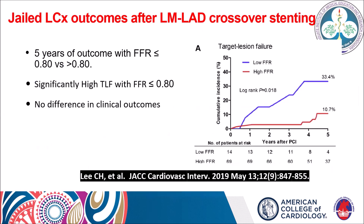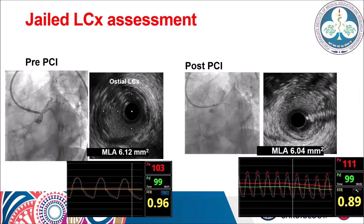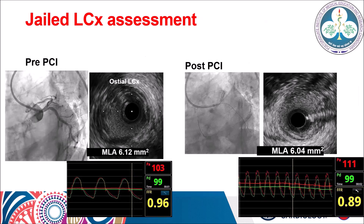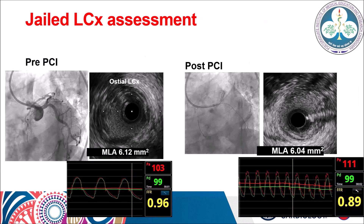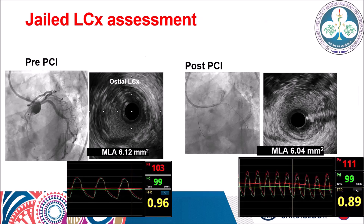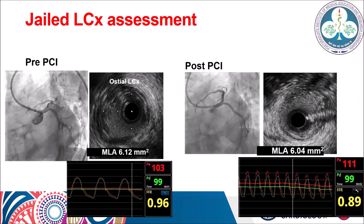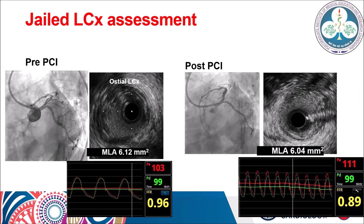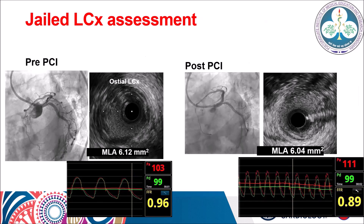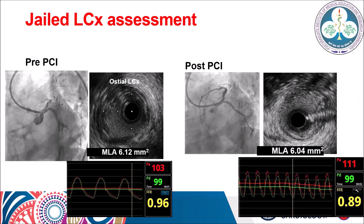Regarding jailed LCX outcomes following left main to LAD crossover stenting, a study showed that patients with post-stenting FFR less than 0.8 had significantly more target lesion failure at five years compared to those with FFR more than 0.8. In an illustrative case, pre-procedure ostial LCX MLA was 6.12 mm² with FFR of 0.96; after left main to LAD crossover stenting, the ostial LCX appeared angiographically stenosed, but MLA remained 6.04 mm² and FFR was 0.89, so no further intervention was required for the side branch.